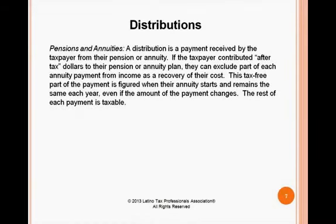A distribution is a payment received by the taxpayer from their pension or annuity. Don't confuse contributions with distributions — contributions are not necessarily tax deductible or a tax credit. A distribution, most of the time, requires you to include it as taxable income. If the taxpayer contributed after-tax dollars to their pension or annuity plan, they can exclude part of each annuity payment from income as a recovery of their cost. This tax-free portion remains the same each year; the rest is taxable.